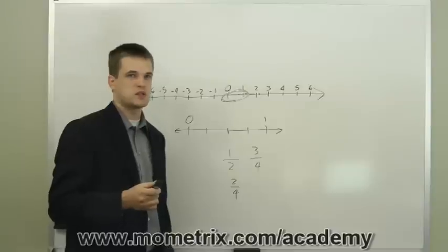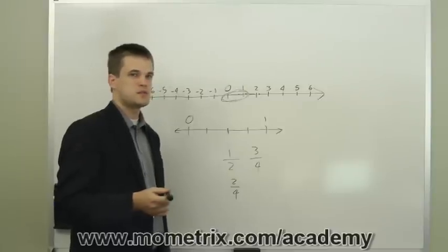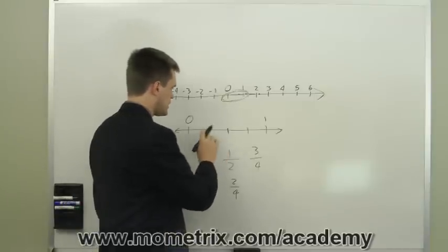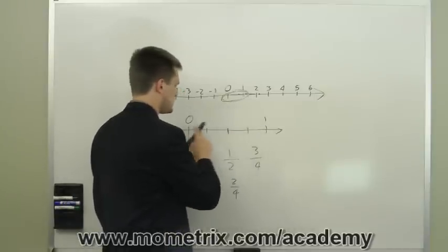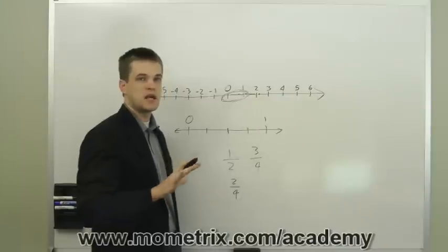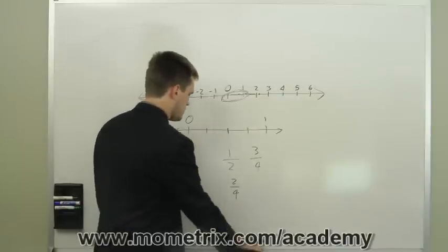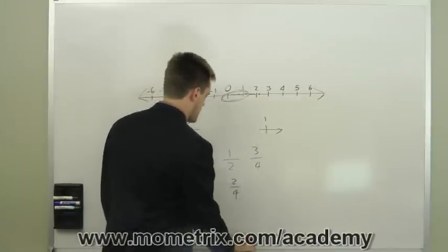This provides a good transition into decimals. A decimal representation is essentially dividing up the space between zero and one into ten different segments. I'll go ahead and see if I can draw that up a little bit.